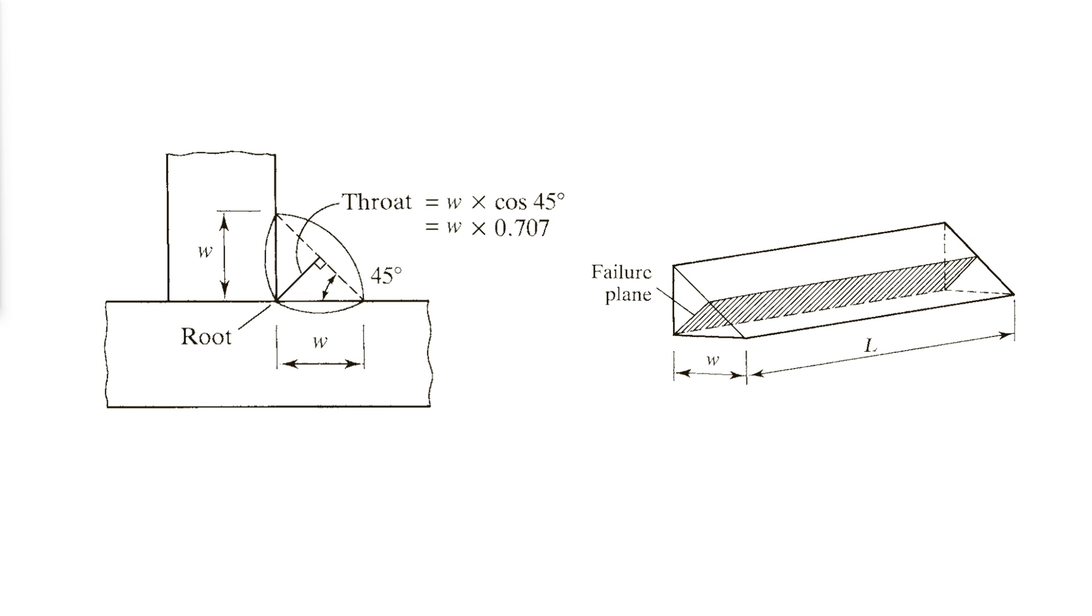For fillet welds made with the shielded metal arc process, the throat is the perpendicular distance from the corner or root of the weld to the hypotenuse and is equal to 0.707 times the size of the weld.